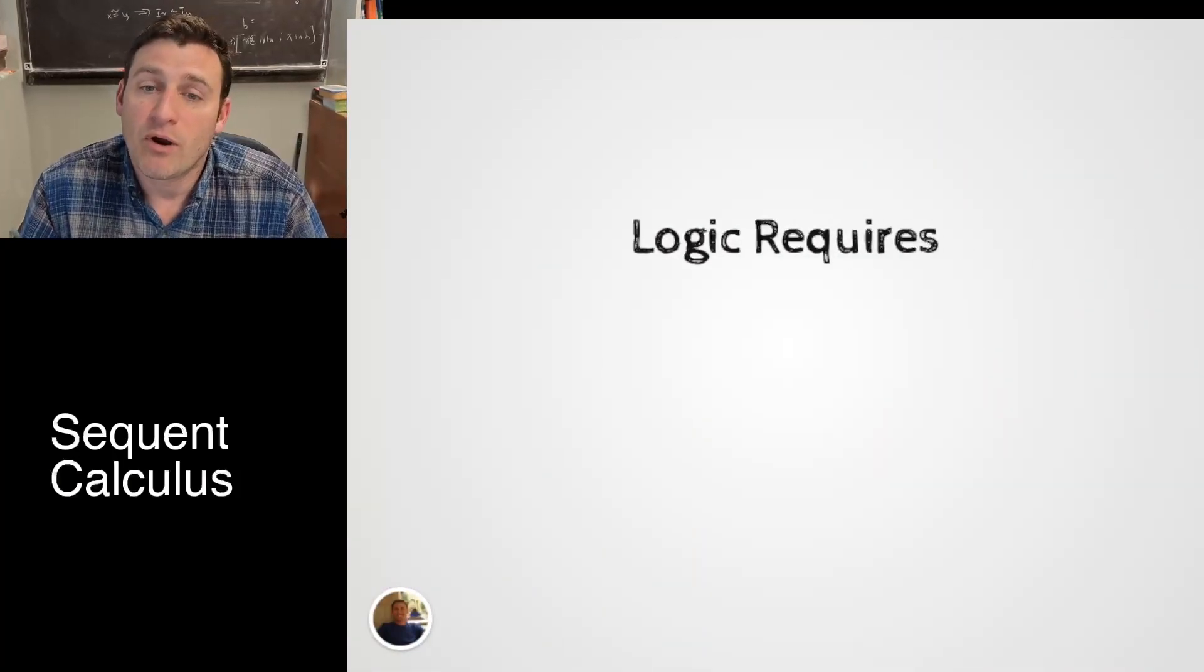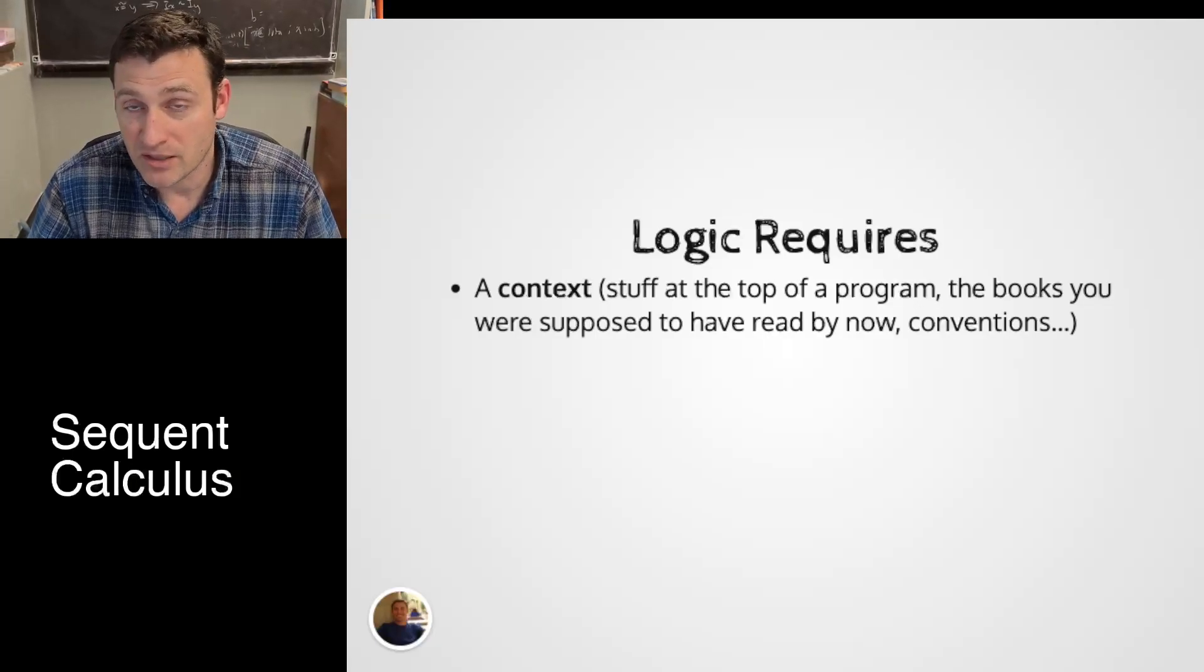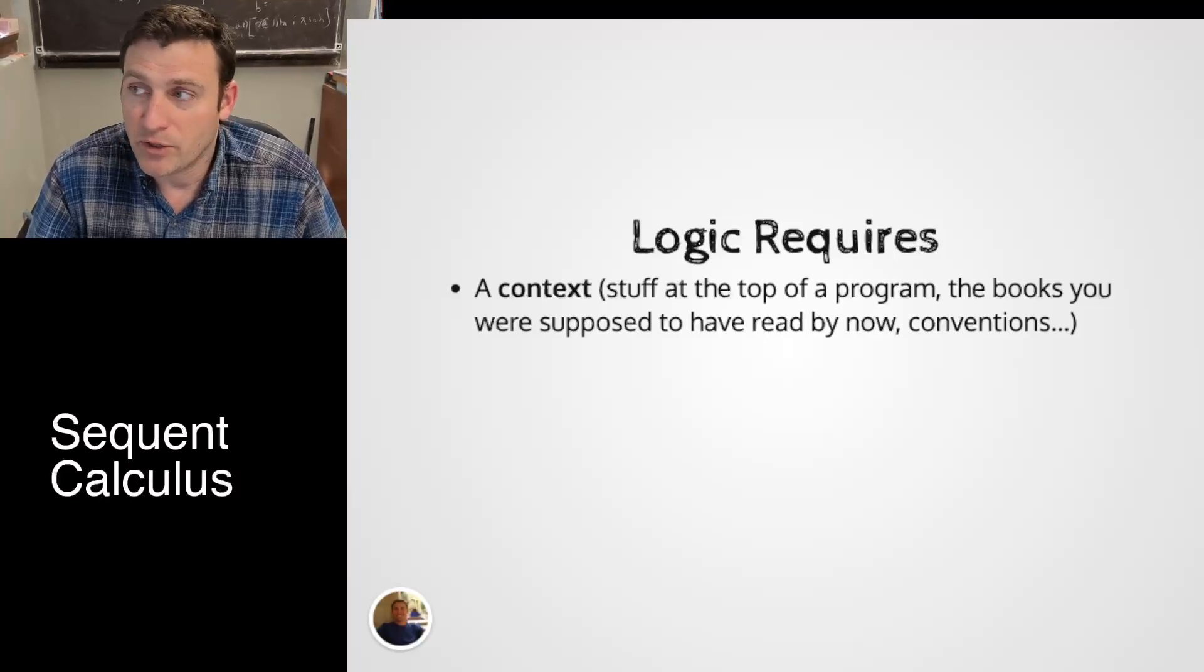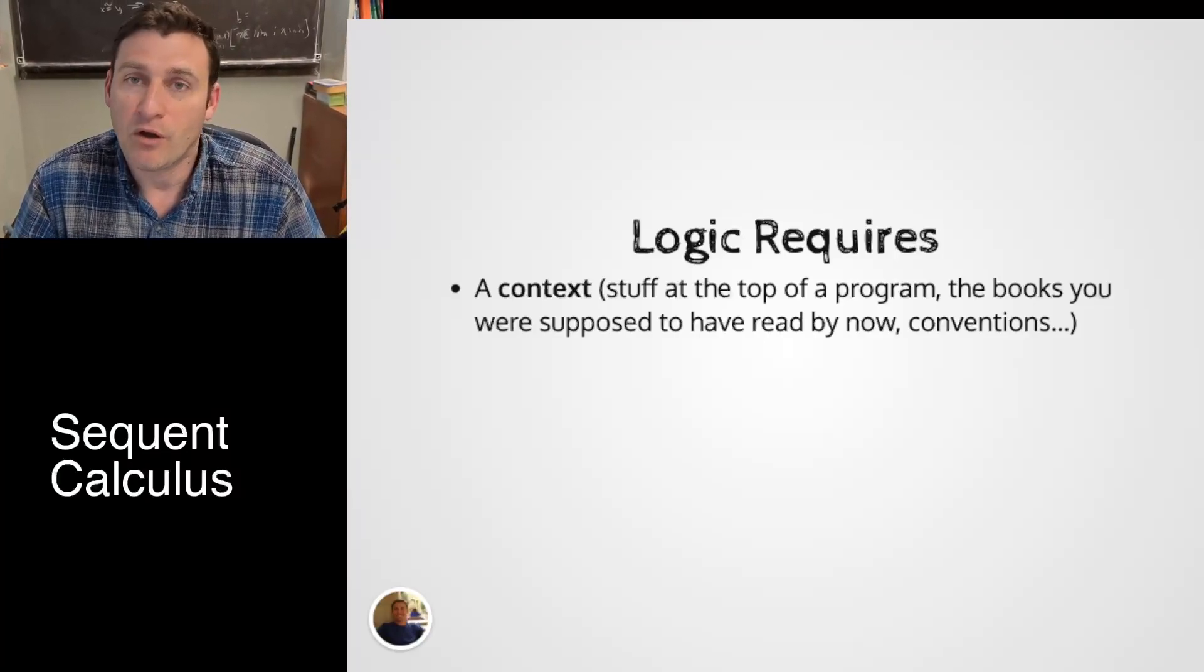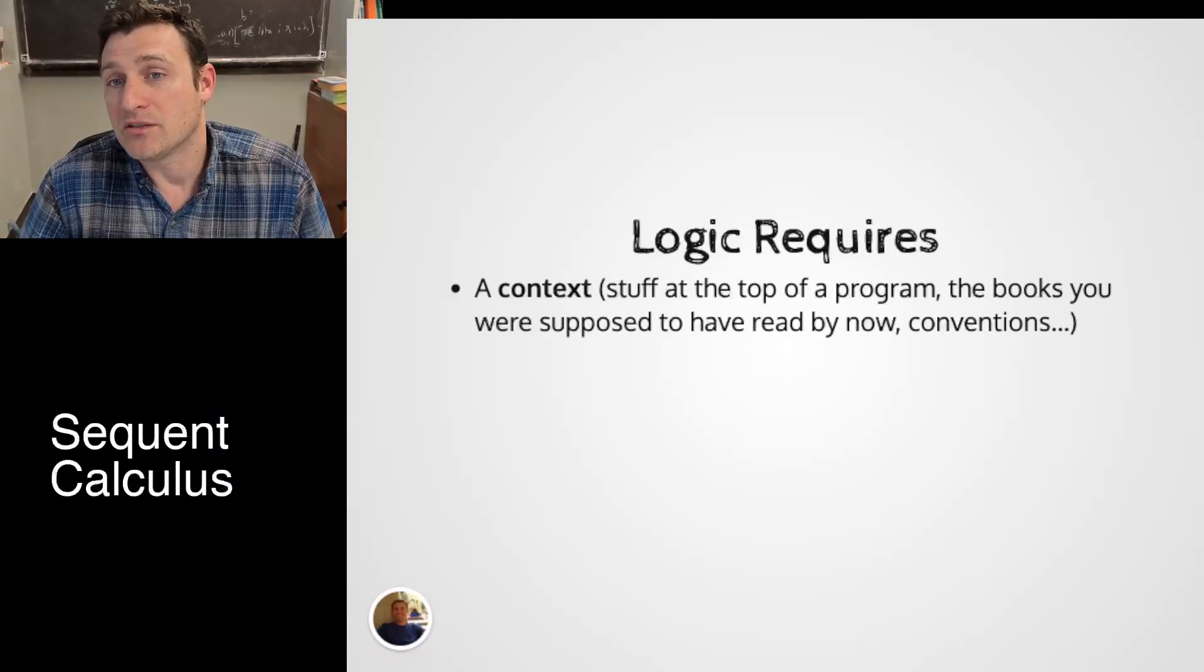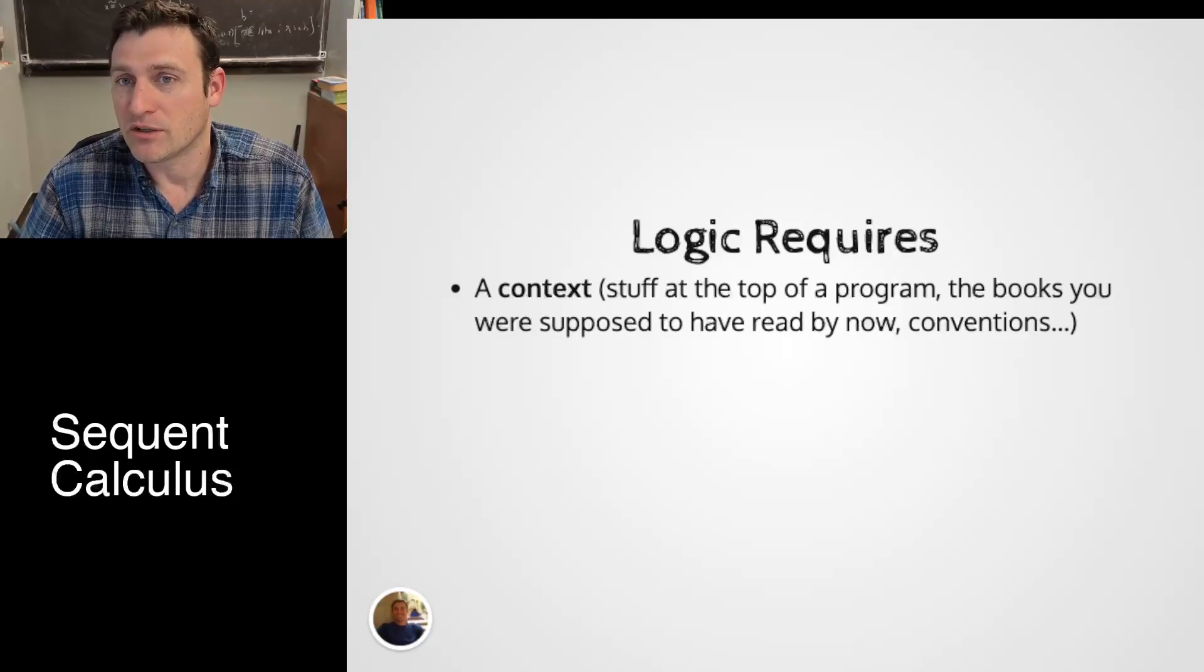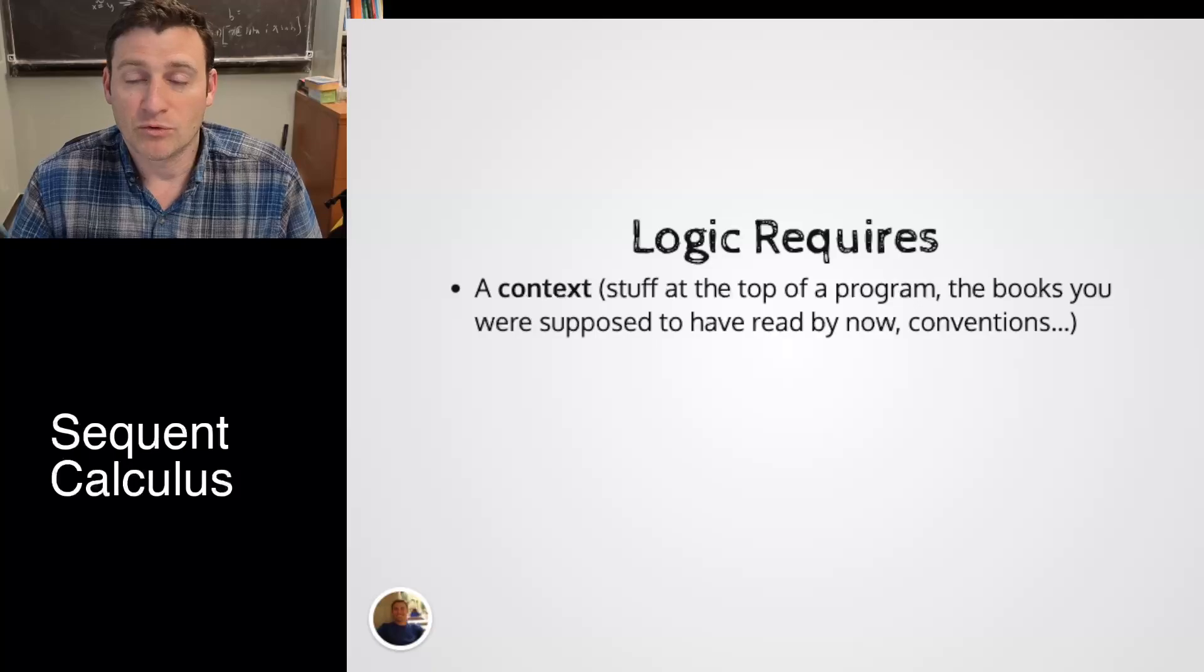Our logic requires a few things. First, our context. This is the place where we store all the basic assumptions that everyone should know already. This can include a lot of information including all the books you were supposed to know, conventions that everyone's agreed to. We tend to put into our context important things that we don't necessarily expect everyone to remember. So it's a good place to put your logic rules down.